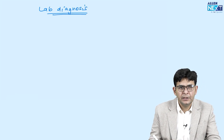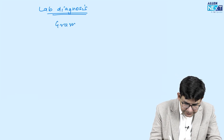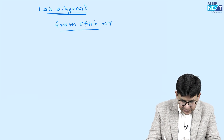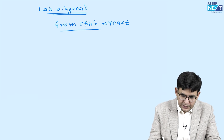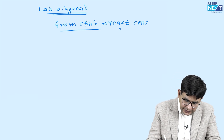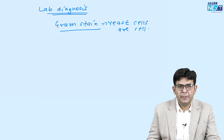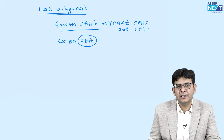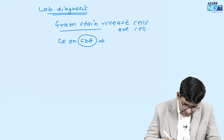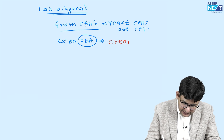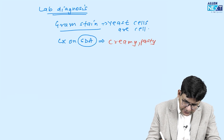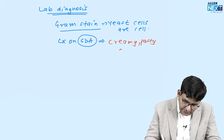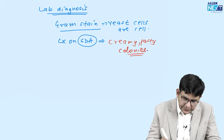For lab diagnosis of Candida: on Gram stain, yeast cells are observed and they stain Gram-positive. You can also culture it on SDA — Sabouraud Dextrose Agar — which is the universal fungal culture media. On SDA, Candida produces creamy pasty colonies that look exactly like toothpaste.